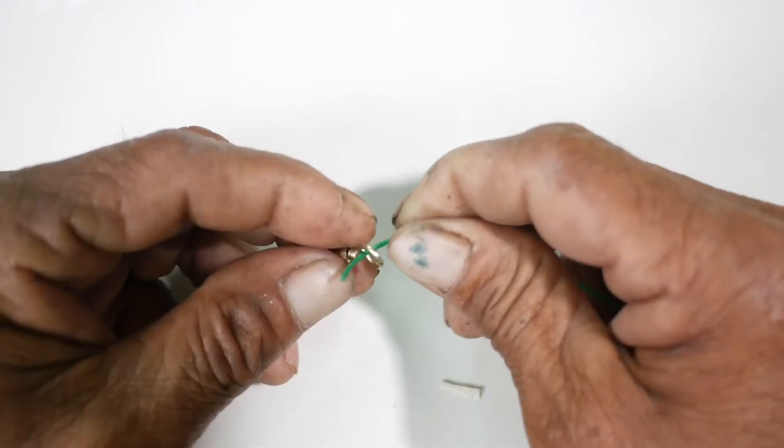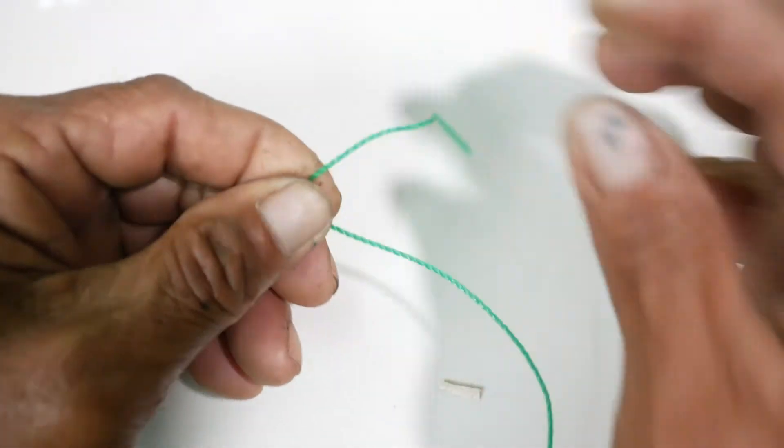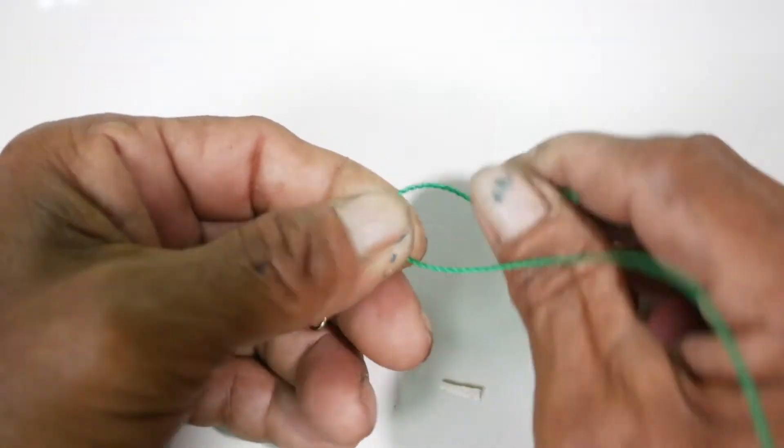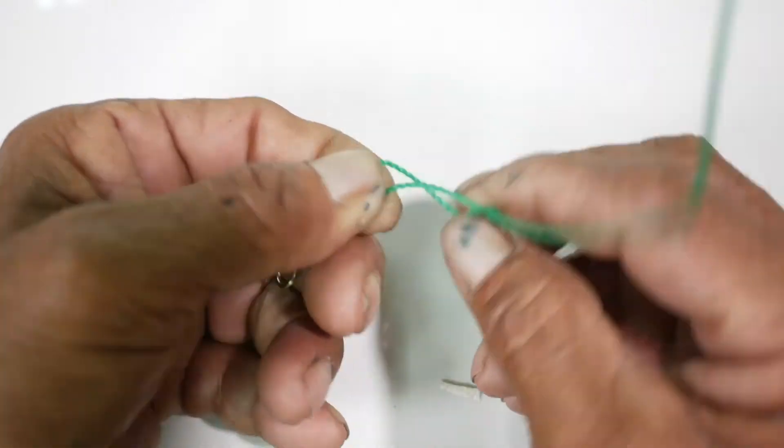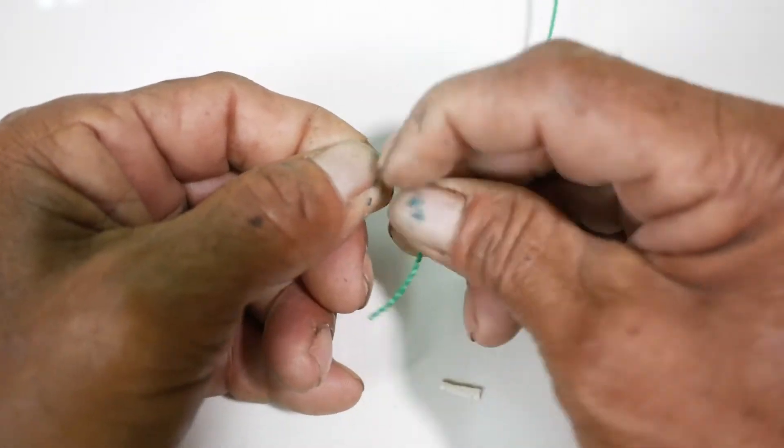Lastly, the improved clinch knot is a type of hitch to tie a hook or swivel using monofilament lines. As you can see, this type of hitch is easy to tie and master.